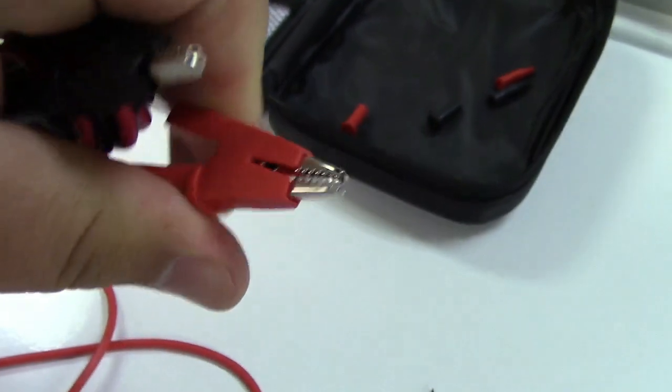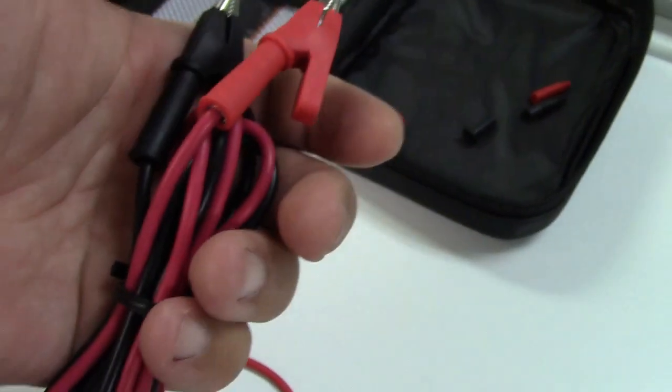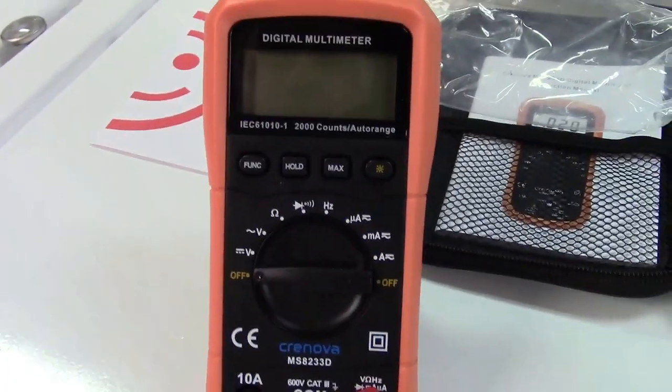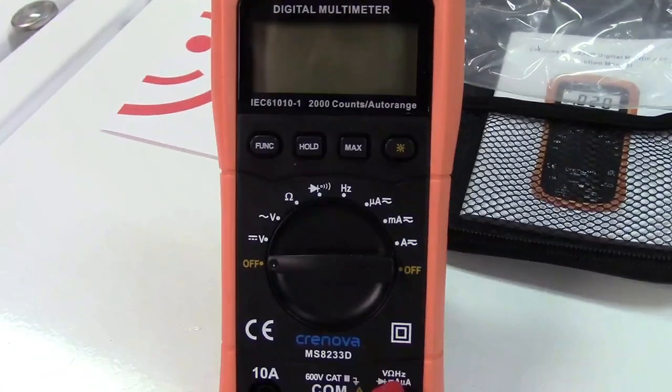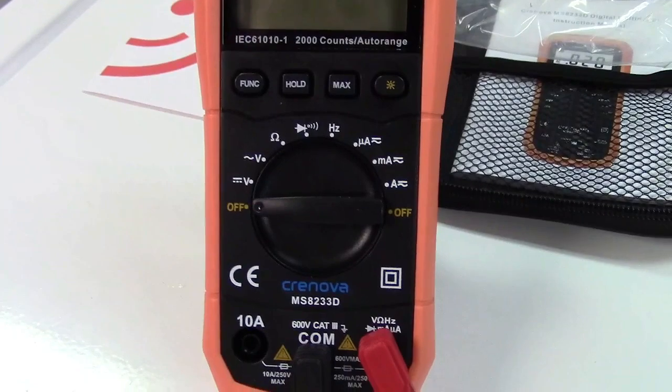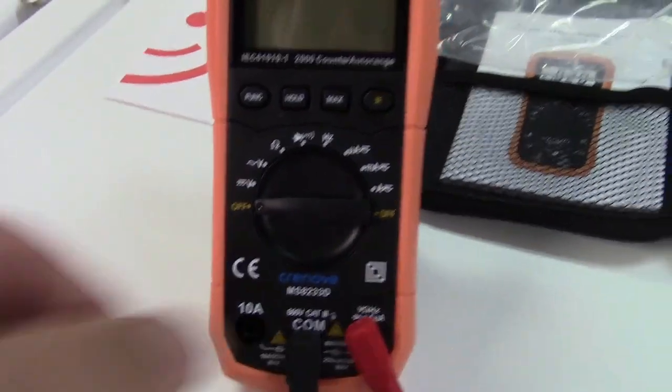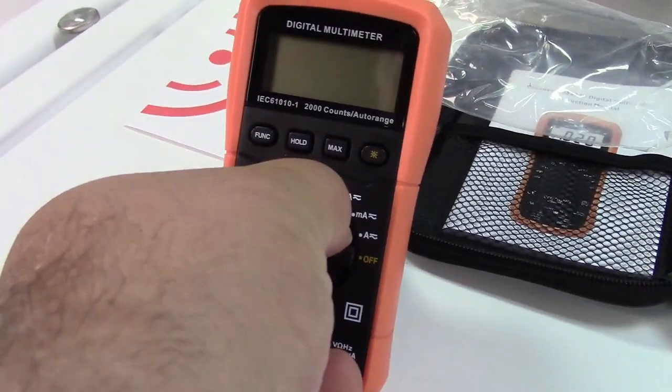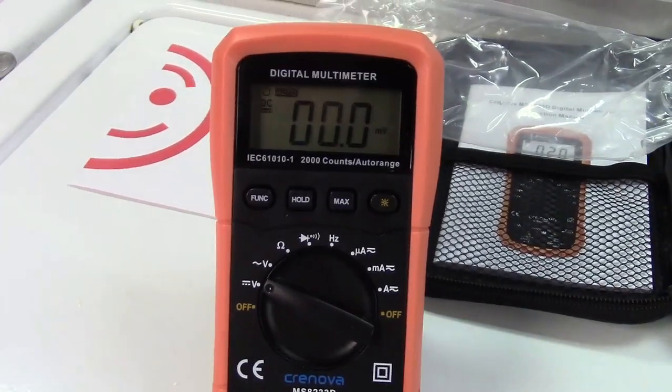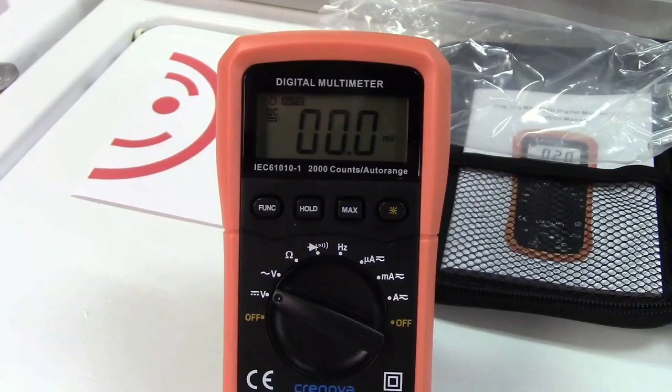This way you can clip onto wires and measure that way. What's really nice is that this is an auto-ranging meter, so there's really nothing you need to do but set it to the unit you'd like to measure and the meter will do the rest. We'll go ahead and turn that to the first setting, which is volts DC.